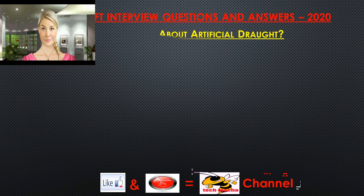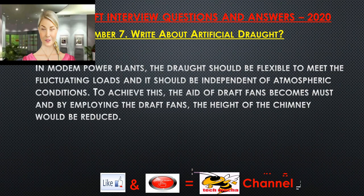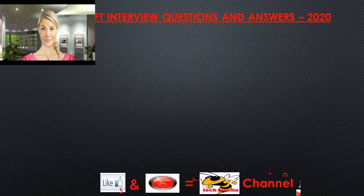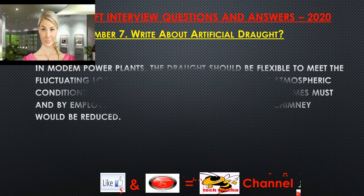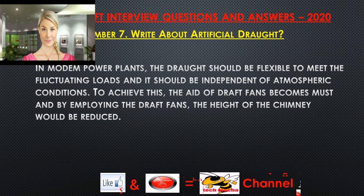Question 7: Write about artificial draft. In modern power plants, the draft should be flexible to meet fluctuating loads and should be independent of atmospheric conditions. To achieve this, the use of draft fans becomes necessary, and by employing draft fans the height of the chimney can be reduced.